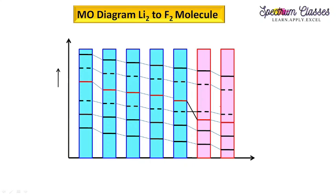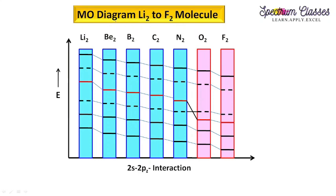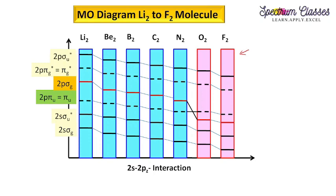Before moving further, I have already discussed the molecular orbital diagram for homoatomic molecules. Here, homoatomic means molecules having same type of atoms. These columns represent the different molecules, and these horizontal lines show the different molecular orbitals for a given molecule. You are all aware about the terms which I have defined in detail in my previous video. Here is the sigma orbital, which is formed by the combination of the 's' orbital.